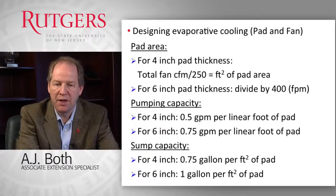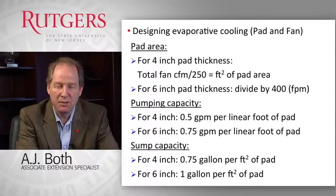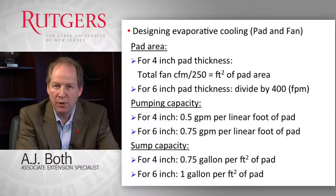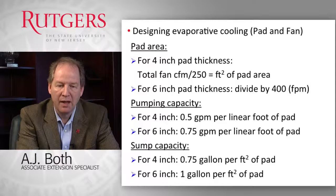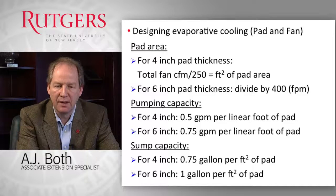Some information about how you design an evaporative cooling system — in this case the pad and fan system. There are different thicknesses of pads used; the most typical is four inches, but sometimes people use six inches. To figure out the total pad area required, you need to know your total ventilation fan capacity in cubic feet per minute (CFM). For a four-inch pad, divide the total fan CFM by 250 to get the square footage of pad area. For a six-inch pad, divide the total fan CFM by 400.